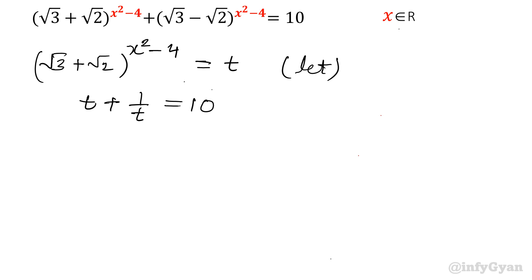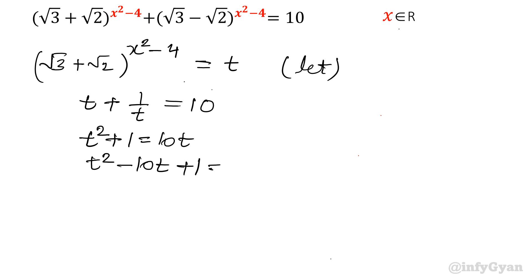Multiply both sides by t. So t² + 1 = 10t, or t² - 10t + 1 = 0. This is a quadratic equation, so we will solve using the quadratic formula. Here a = 1, b = -10, c = 1.